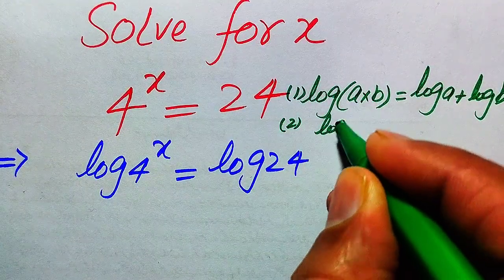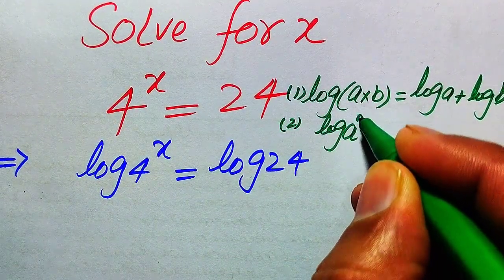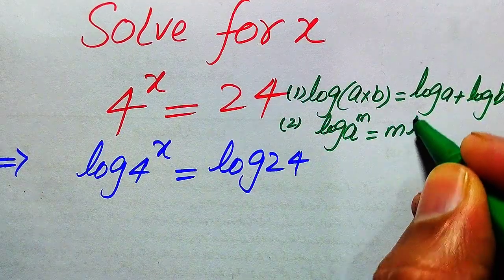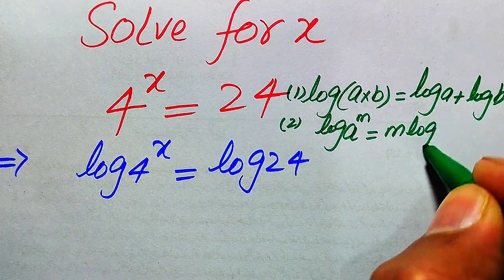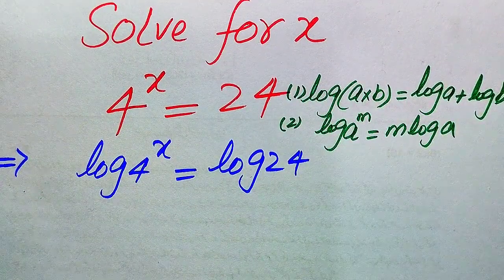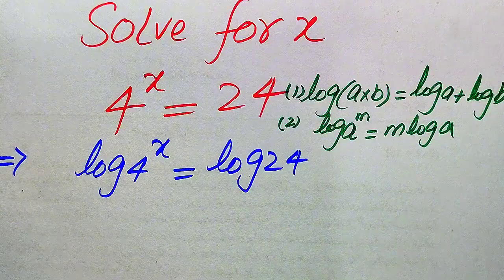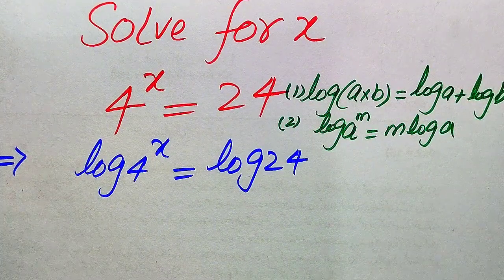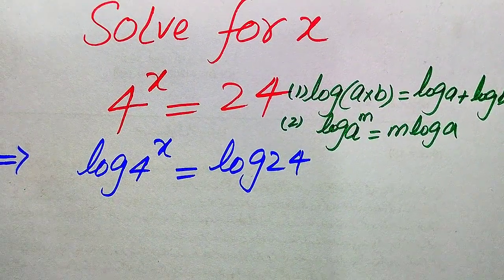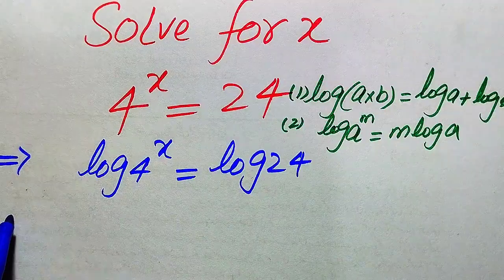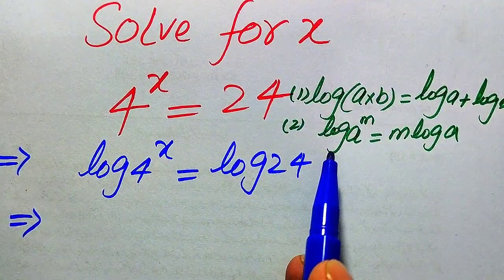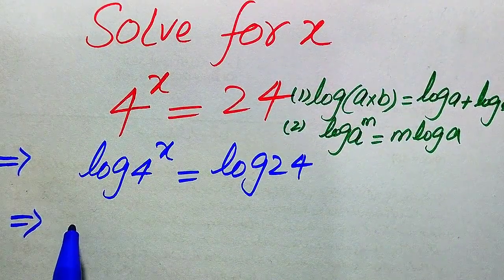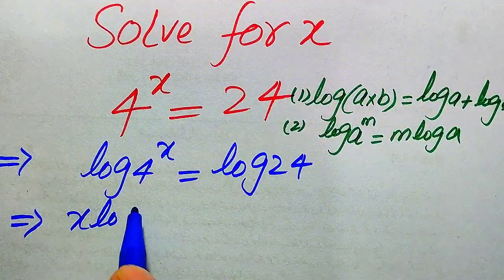We need another property of log: if you have log of a to the power of m, it equals m times log a. We need these two properties of log throughout the solution of this problem, so please remember them. Now on the left-hand side we apply the second property, moving x to the front of log.